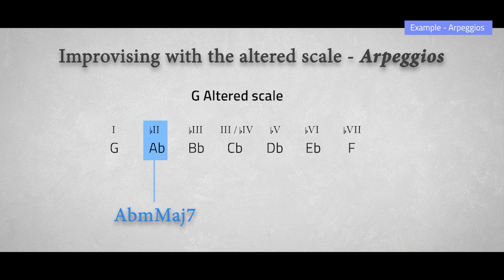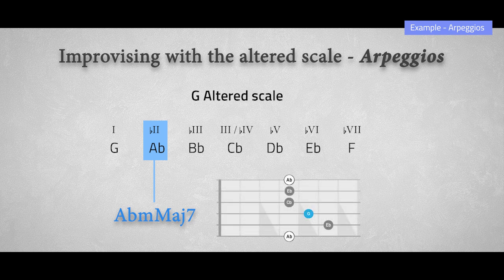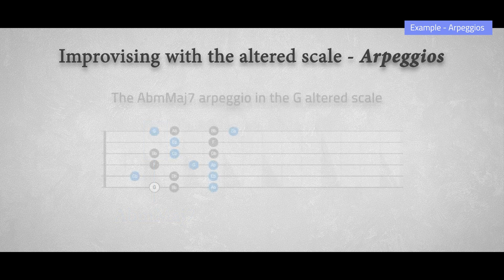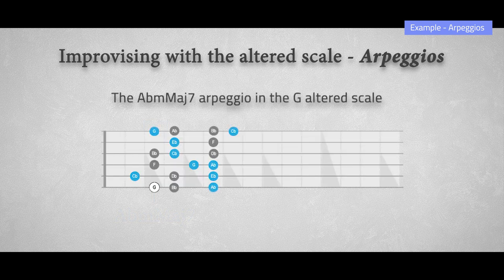Another arpeggio you can find in this altered scale is the minor major 7 chord on the second degree of the altered scale — this is also the tonic of the melodic minor scale from which the altered scale is extracted. As the name suggests, the minor major 7 chord is a minor chord with a major 7 on top of it. It's a beautiful chord. So over the G7 or G altered chord, we can use an Ab minor major 7 arpeggio, which outlines the G7b9b13 chord.